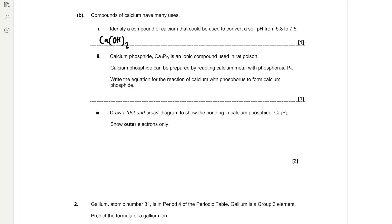Calcium phosphide Ca3P2 is an ionic compound used in rat poison. Calcium phosphide can be prepared by reacting calcium metal with phosphorus P4. Write the equation for the reaction of calcium with phosphorus to form calcium phosphide. So the key bit of information here is that phosphorus has molecules of P4. So we need to remember that in our equation. So we're going to form calcium phosphide. And to balance we need two molecules of calcium phosphide. That means we need six calcium.